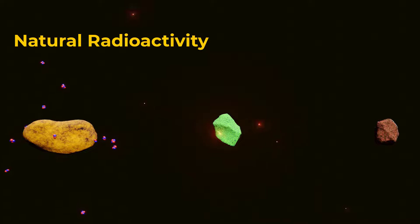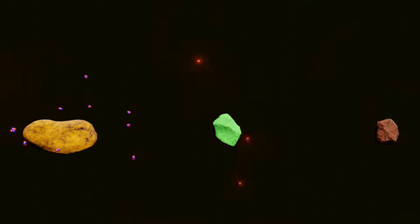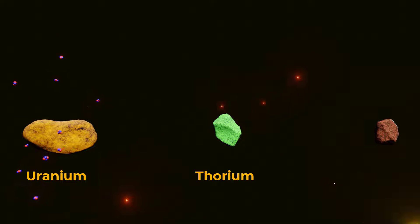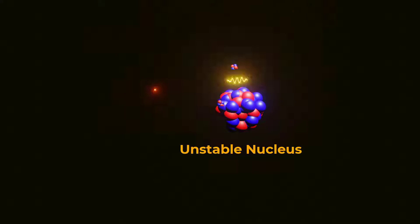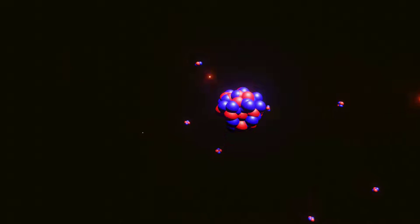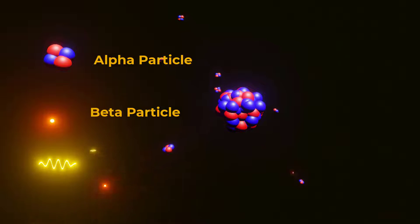Natural radioactivity is a phenomenon that occurs in certain elements such as uranium, thorium, and radium. These elements have unstable atomic nuclei that spontaneously decay, emitting alpha, beta, and gamma radiation.